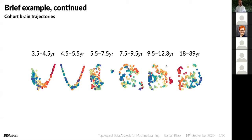This was one of the first applications of time-varying cubical complexes. Another thing that works well is classification of unlabeled graphs using classical machine learning. You take the degree filtration, look at edges and vertices of a graph, sort them accordingly, repeat the analysis pipeline, and learn weights for topological descriptors to improve predictive power. Since there are no node or edge labels, the degree turns out to be a relatively good descriptor of the information contained in the graph.